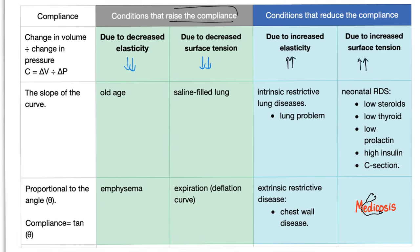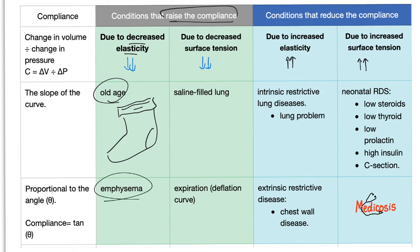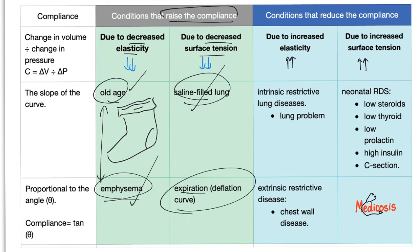Conditions that increase compliance due to decreased elasticity: old age — as you get older, your lung is like socks with a very lax rubber band, easy to expand but decreased recoil. Also emphysema, which is similar to old age but due to smoking. Increased compliance due to decreased surface tension: a saline-filled lung (theoretical lab setting) and expiration, which has greater compliance. Conditions that decrease compliance due to increased elasticity include intrinsic lung disease such as fibrosis, or extrinsic restrictive lung disease such as chest wall disease — for example, kyphoscoliosis.